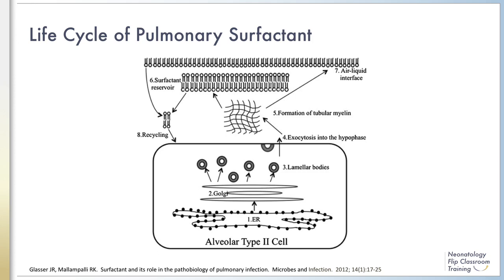After transition, surfactant is utilized in the aeration of the lungs, and utilized surfactant is transitioned into an inactive vesicular form used for recycling of its components. Over 95% of surfactant is recycled, and these components can be recycled up to 10 times. Surfactant turnover takes about 10 hours, and the half-life of surfactant is approximately 3 days.